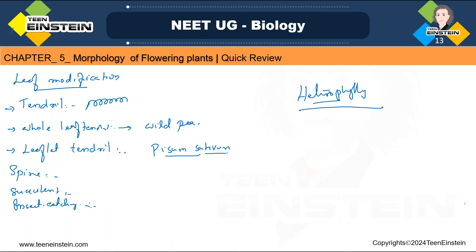Leaf scales — thin, membranous structures; that is another modification of leaf, which you can see on ginger. So we need to learn the functions of leaf, the parts or structure of a leaf, venation — parallel and reticulate — types of leaves — simple and compound — classification by origin and function, phyllotaxy — alternate, opposite, and whorled — and all leaf modifications with examples.